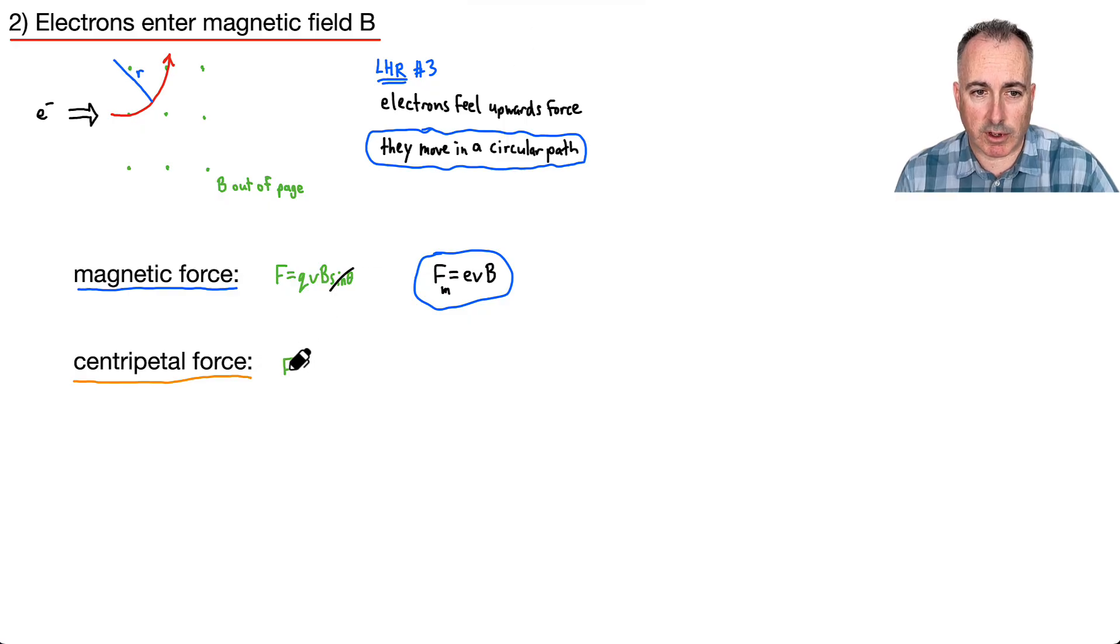So that's m v squared over r. The magnetic force is causing the centripetal force, so that means I can set these two forces equal to each other. I'll set FM equal to FC.